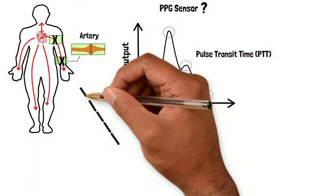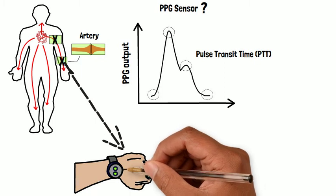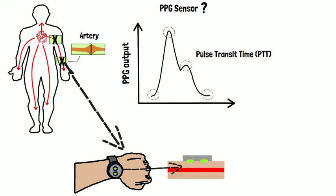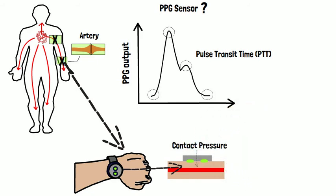To prevent motion artifact in the recorded data, sensors are clipped or wrapped onto the body surface. These sensors compress the artery beneath the skin and this compression pressure is referred to as contact pressure.